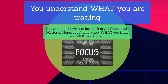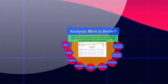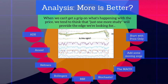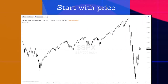You have to have a plan and treat this like a business where failure is not an option. You understand what you're trading and why — you've stopped trying to be a jack of all trades. Now you finally know what you trade and why. After many serial disappointments, those that make it finally figure out they need to adopt their own plan. I see a lot of people starting with something relatively simple, then making things incredibly complex in the first year or two, before eventually simplifying with time.